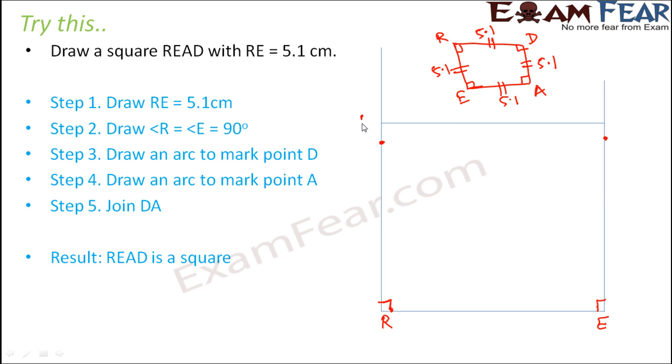And then you join D and A. So let us say if this is D, if this is A. So what happens, this distance is also 5.1 because we measured this distance and only then we marked the points. So these are all 5.1 and also you have drawn these 90 degrees. So these are also 90 degrees and that's how we get a square.